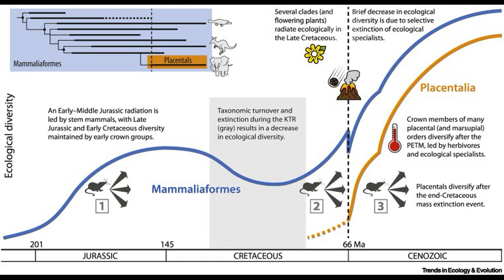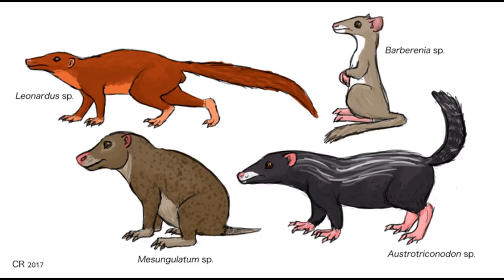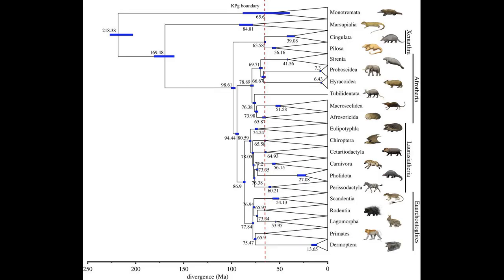Well, the explosive model can be rejected almost immediately because the mutation rate necessary for all placental orders to split post-KPG is commensurate with that of double-stranded DNA viruses. Additionally, the early fossil record of placental mammals is highly incomplete due to most placentals being small insectivores with delicate bones, precisely the features that would make preservation difficult. Phylogenies based on large gene sets appear to favor the long-fused model or slight modifications on it. Essentially, most placental orders diverged before the KPG boundary except maybe the Xenarthran orders, but most crown members originated afterwards.